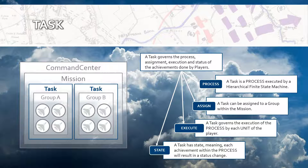A task is basically similar to a mission but a bit more complicated. A task is a process executed by what we call a hierarchical finite state machine. Remember the word process, as I'll go into more detail on that later. A task can be assigned to a group within a mission, and once assigned it will be executed following the process that runs the task, which is executed by a unit hosted by a player. A task has a state, meaning each achievement within the process results in a status change.